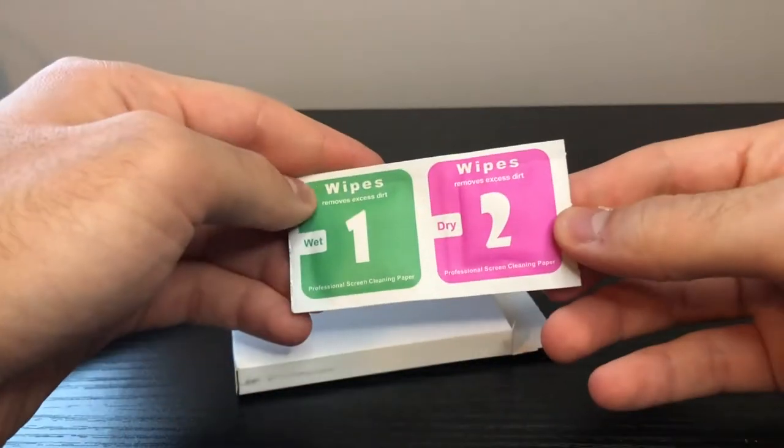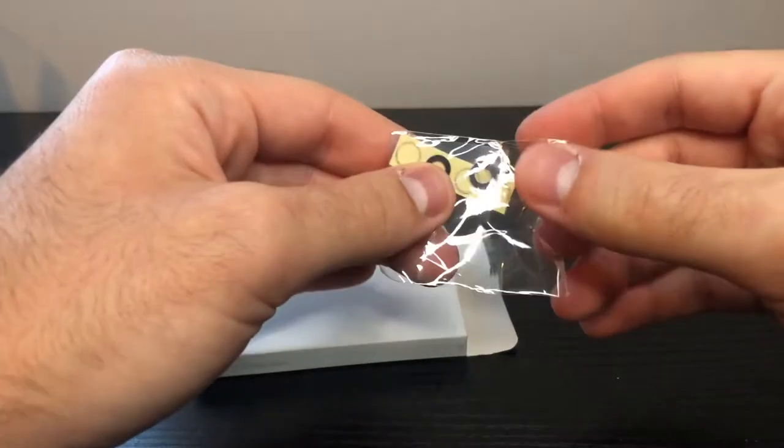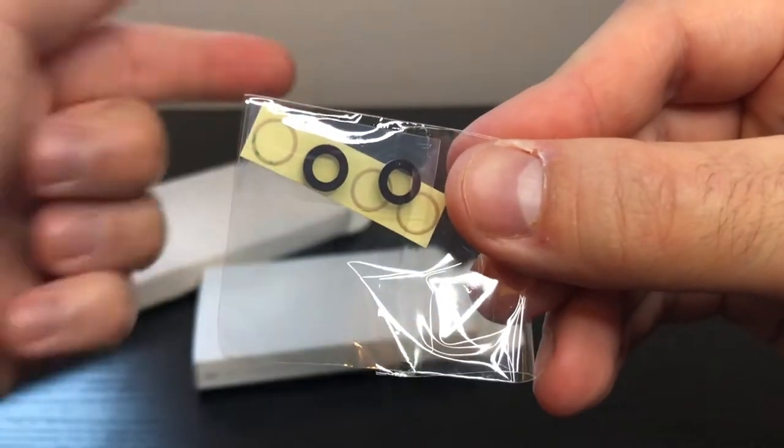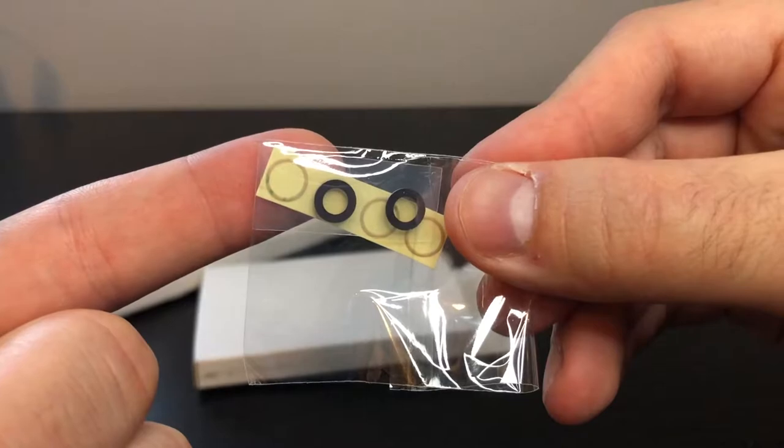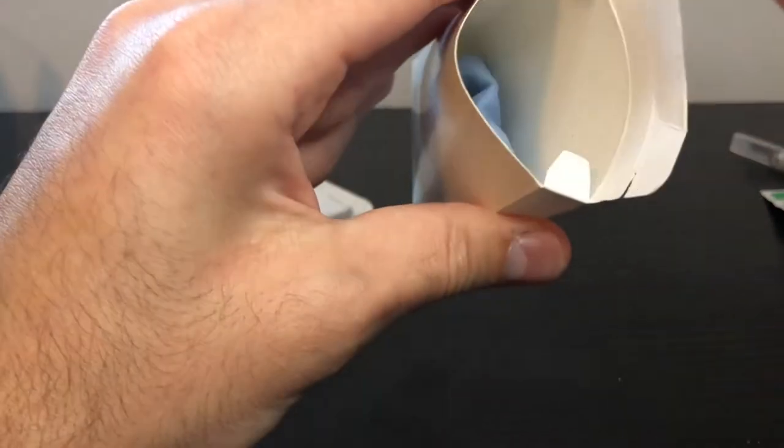Now opening up this box, you can see there are some wet wipes. I actually didn't use them at all. Just so long as you don't get your fingerprint on the actual lens itself, you'll be fine without them. You can see that it came with the lens and then behind it is the adhesive.